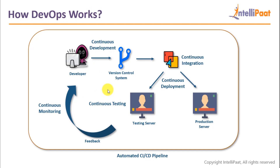Now let's understand these terms. Why are we calling it 'continuous'? Continuous basically means it goes on and on — it never stops. The product is always being developed; it is always in some part of the lifecycle. So we have a developer who will be pushing their code to a version control system.